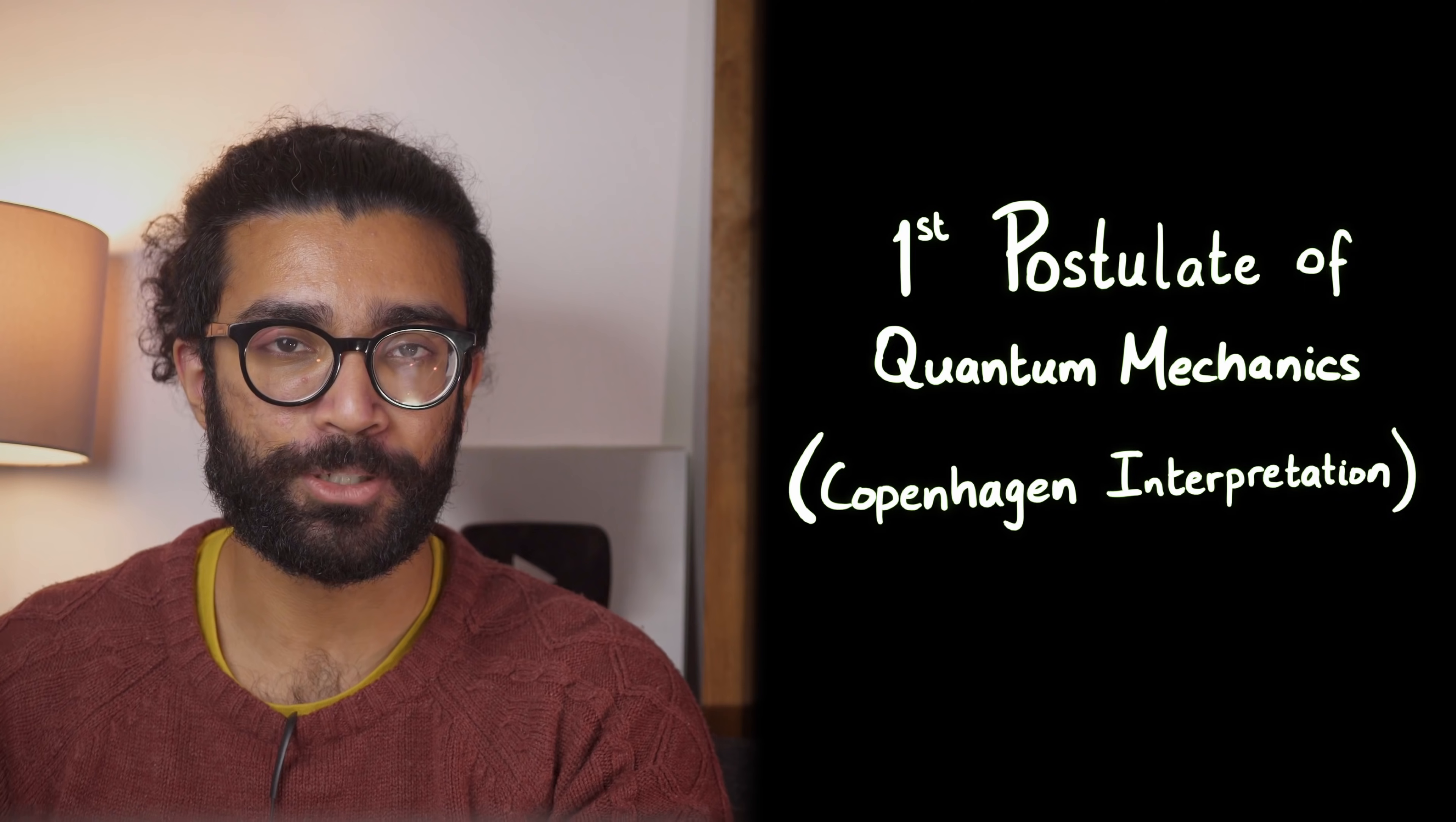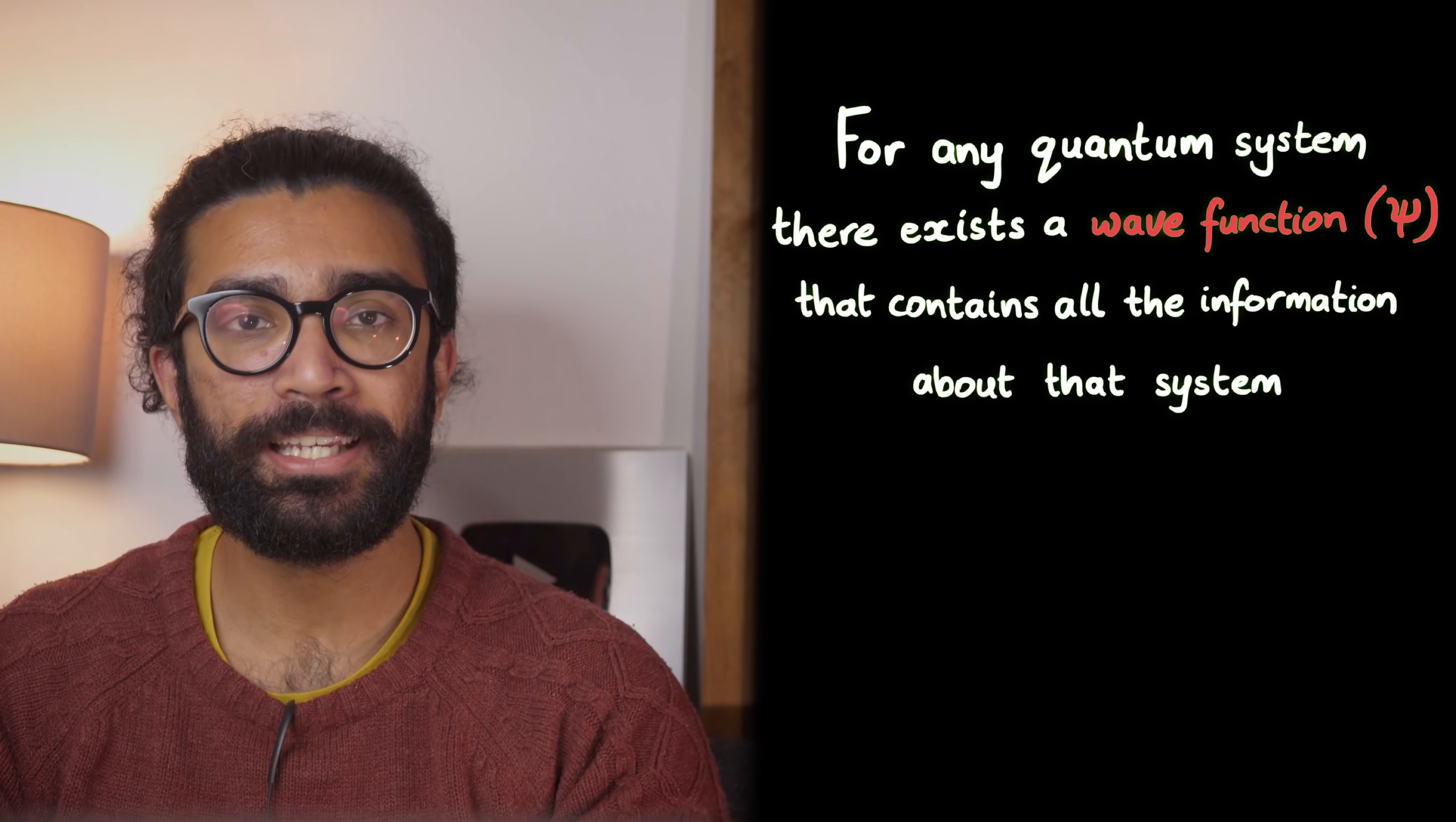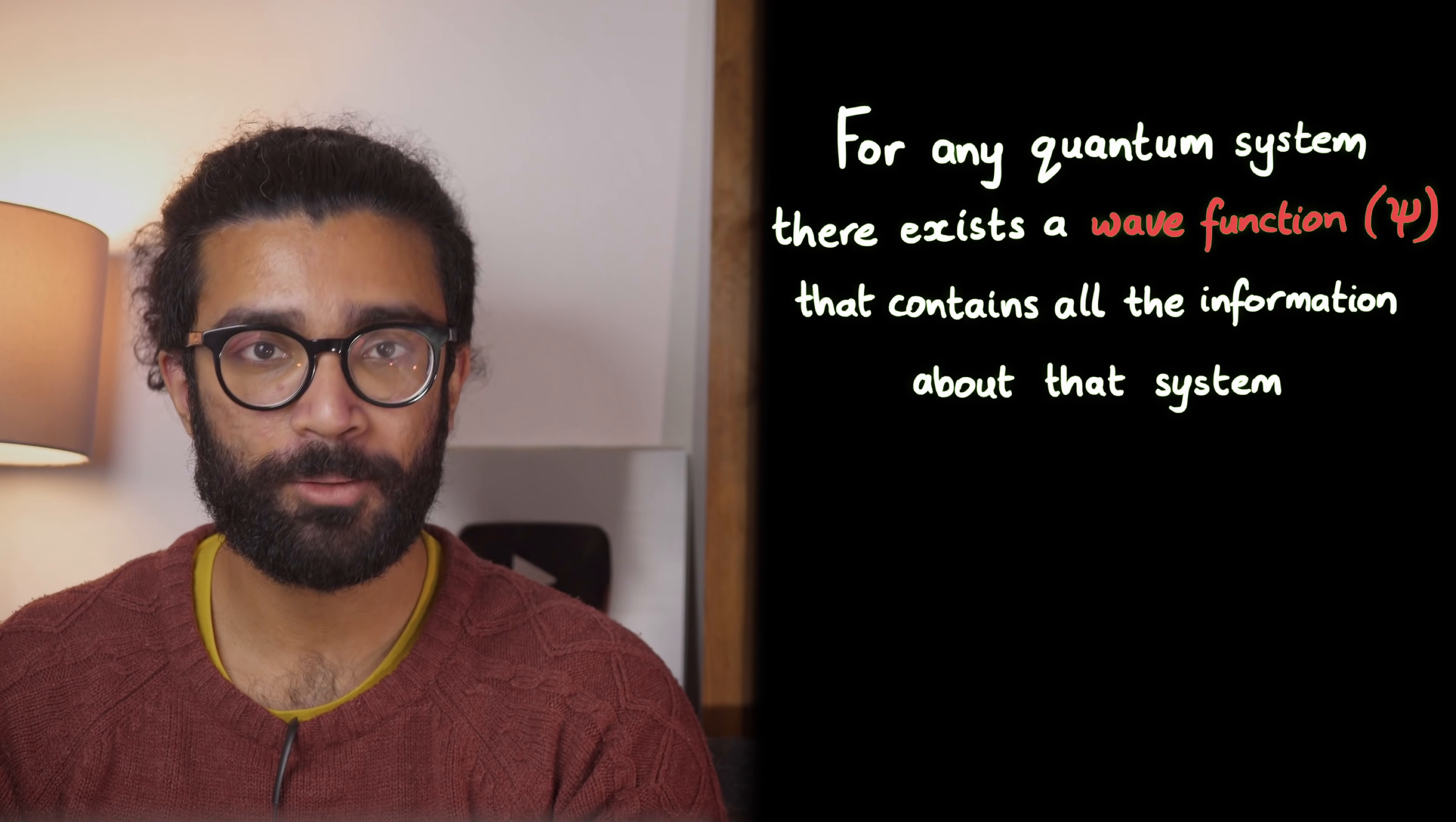Our postulates, if you will. Let's now take a look at one of the postulates of quantum mechanics, or at least the most commonly accepted formulation of quantum mechanics at the moment, known as the Copenhagen interpretation. In this theory, the first postulate says that for any quantum system that we happen to be studying, there must be an associated wave function, ψ.